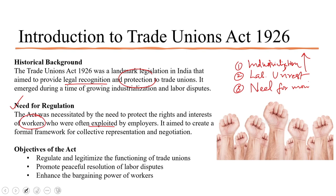The act aimed to create a critical framework for collective representation and negotiation. Prior to this act, trade unions operated in a legally grey area. The lack of regulation brought challenges like uncertain legal status, unfair labour practices, and the absence of a structured framework for resolving disputes between workers and employers, which could lead to prolonged strikes and disruptions. Industrial disputes also emerged as a significant factor in necessitating such a trade union act.